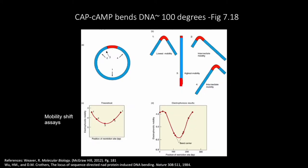Through experimentation using a circular permutation gel retardation assay, Wu and Crothers were able to determine that the CAP-cAMP complex bends DNA. They were even able to determine that the angle of the bend is about 100 degrees. Now, let's take a look at the method behind the experiment, the circular permutation gel retardation assay.